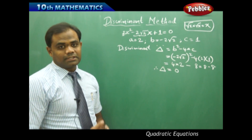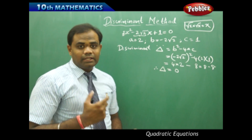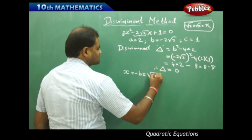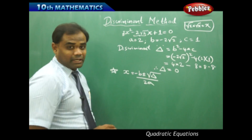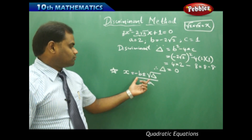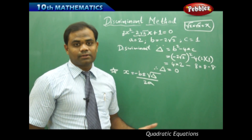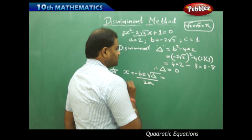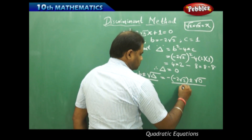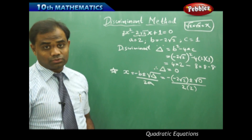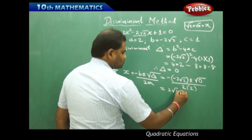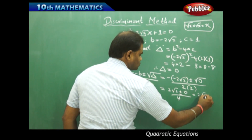Now applying the discriminant formula: the roots of any quadratic equation in general form are given by x equals minus b plus or minus square root of delta, divided by 2a. Substituting b equals minus 2 root 2 and delta equals 0, we get: minus of minus 2 root 2 plus or minus square root of 0, divided by 2 times 2. This simplifies to 2 root 2 plus or minus 0 over 4, which is 2 root 2 divided by 4.